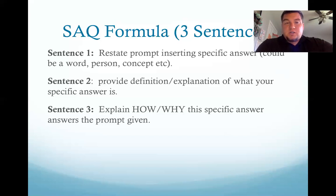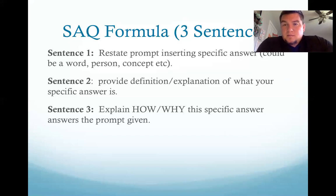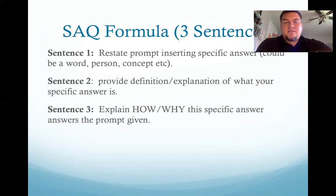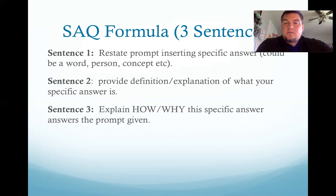For example, a prompt might say 'evaluate causes of the French Revolution' and all you see are the words 'French Revolution,' so you end up talking about different parts of the French Revolution without actually addressing the cause. Restating the prompt and then inserting something specific at the end helps you stay on track. The second thing is provide the definition or explanation of whatever your specific answer is — this is where you're showing off what you know in history. If it's a book, say what the book was about; if it's a battle, explain who was involved. The third sentence is you explain how or why this specific answer answers the prompt given. Two and three might seem like the same thing, but they're not necessarily, depending on the question.